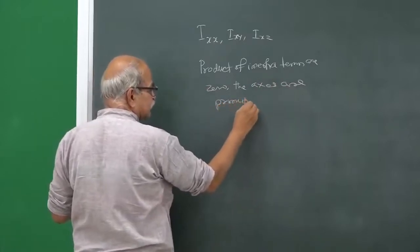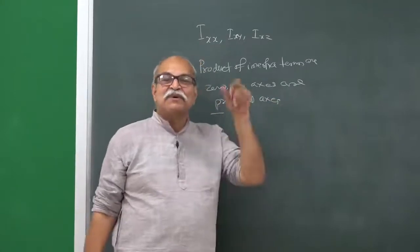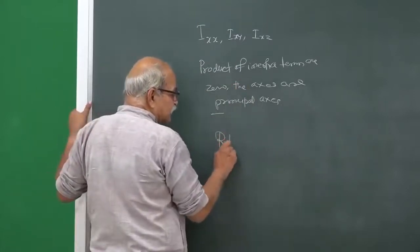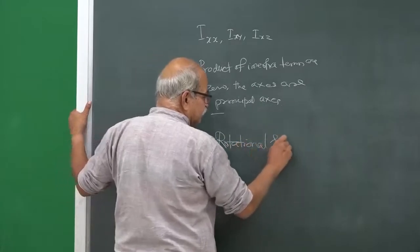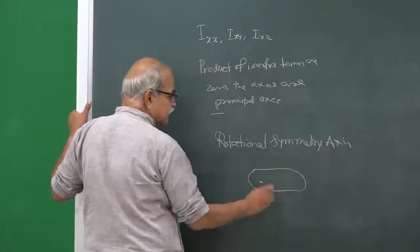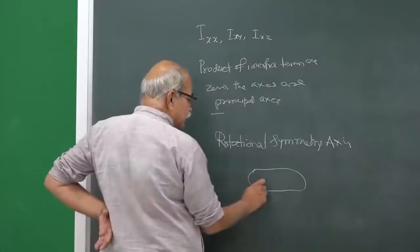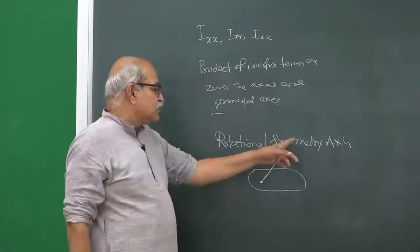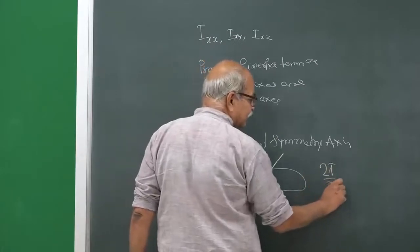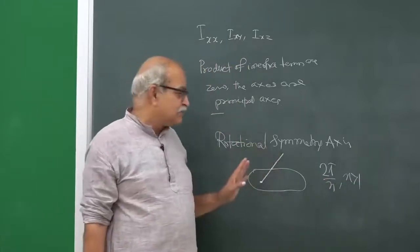That is the definition of principal axes. We had two simple ways to identify if a particular line is a principal axis or not. The first was a rotational symmetry axis. If you have a rigid body with a given origin and you find a line which is a rotational symmetry axis — meaning you can rotate the body about this line by an angle 2π/n, where n is an integer greater than 1 — then this line is a principal axis.